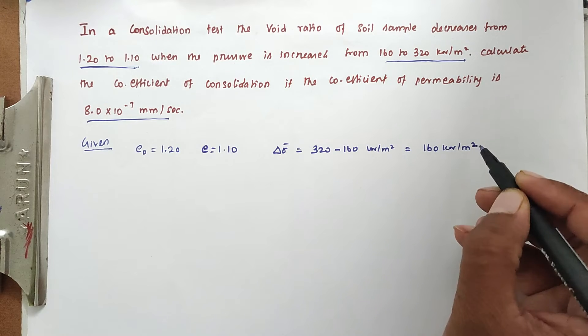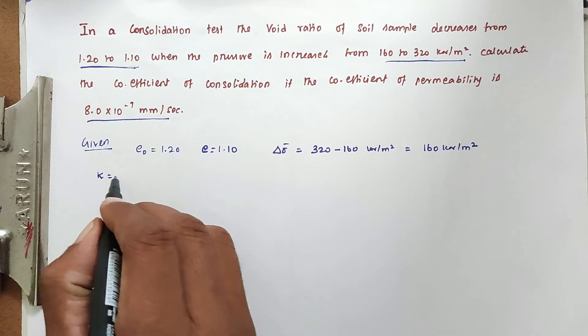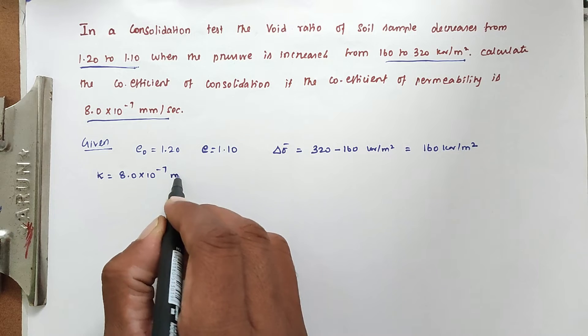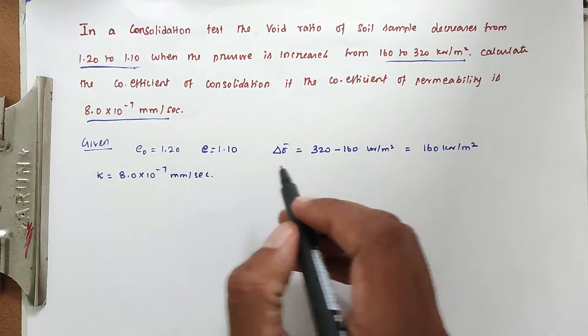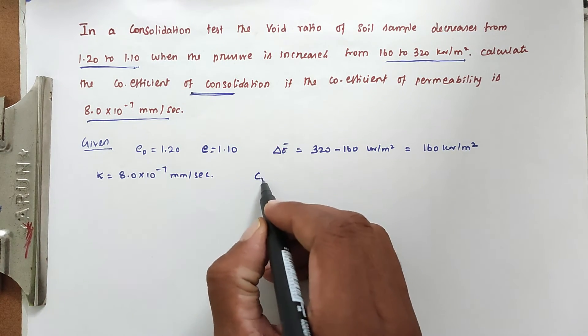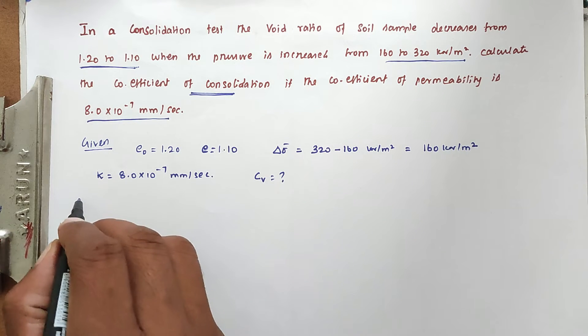Then coefficient of permeability k equals 8.0 × 10^-7 mm per second. We need to find out the coefficient of consolidation, that is Cv.